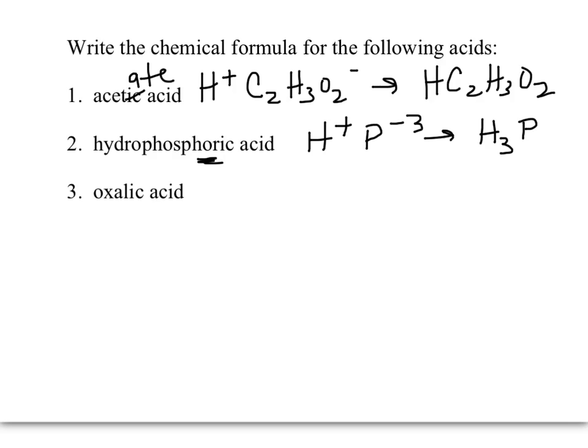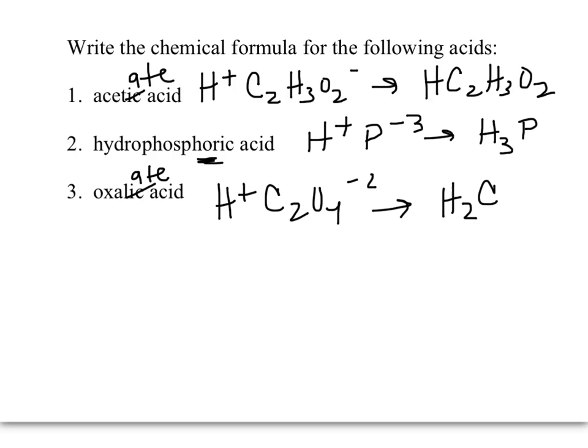For oxalic acid, there's no prefix 'hydro,' so it has to be based on a polyatomic ion. An '-ic' ending replaces an '-ate' ending, so we're looking for oxalate. Hydrogen and oxalate: C2O4 with a negative two charge gives H2C2O4. Please do not reduce or simplify any of those subscripts — otherwise you will not be able to identify the oxalate polyatomic ion.